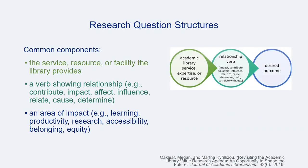One typical structure for this type of library assessment question can be described in three parts: a library offering being explored, which may be a service, resource, space, or some other expression of library support for users; a verb showing a relationship like contribution, impact, influence, etc.; and an area of outcome or impact. In academic library spheres, that might often be expressed in terms of productivity, affordability, efficiency, equity, learning, etc.